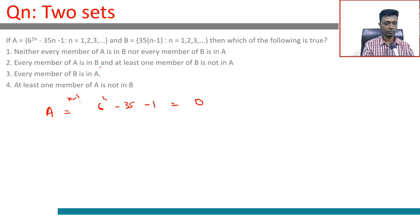We put n=2: 6^4 - 70 - 1. n=3: 6^6 - 105 - 1, going to be some numbers.